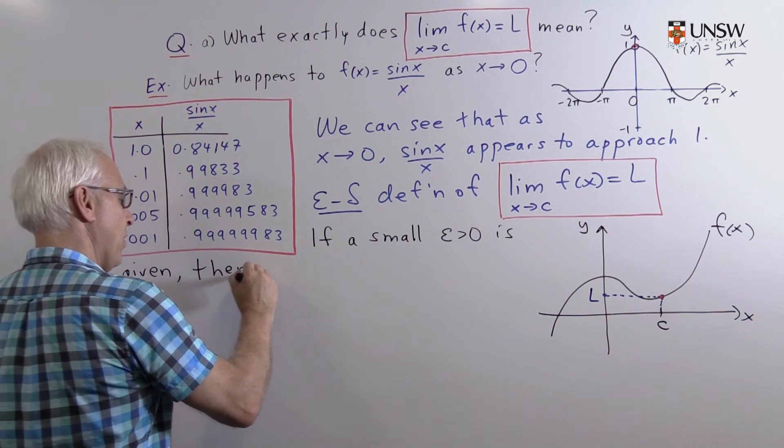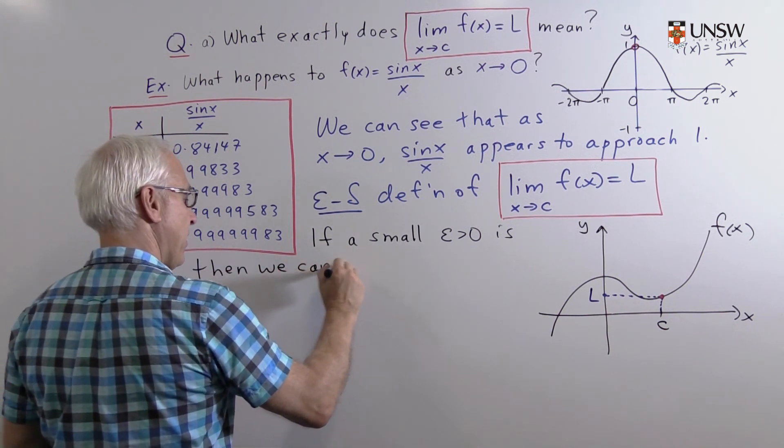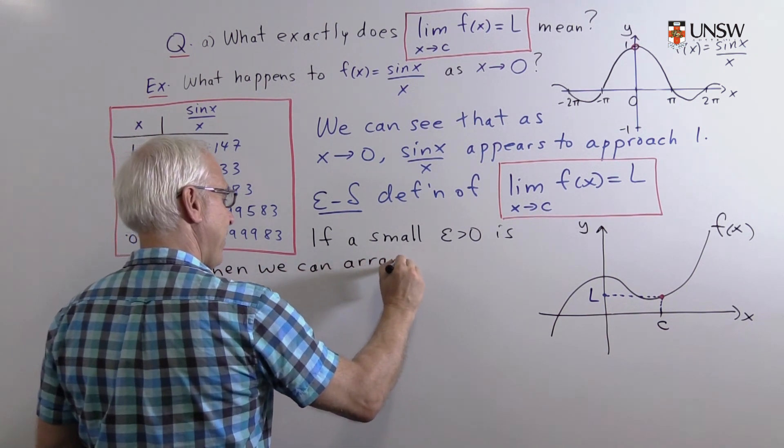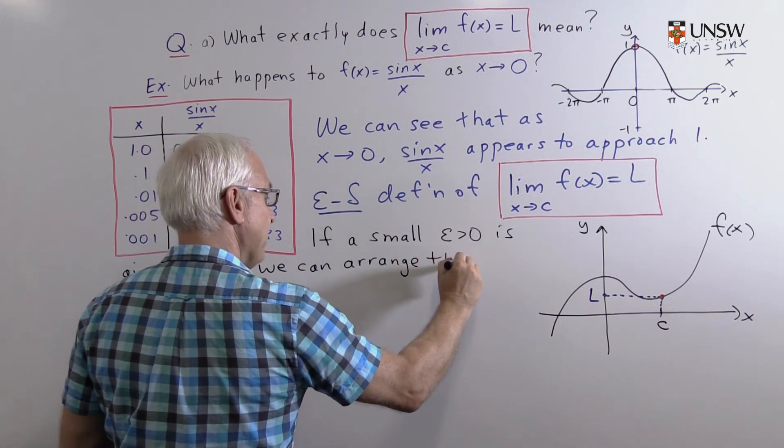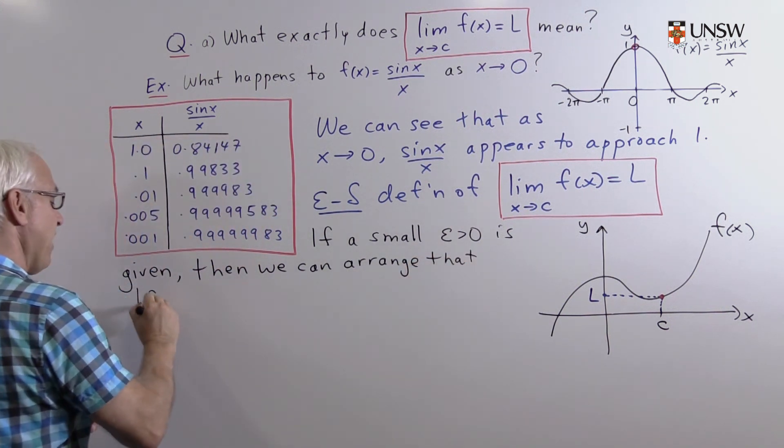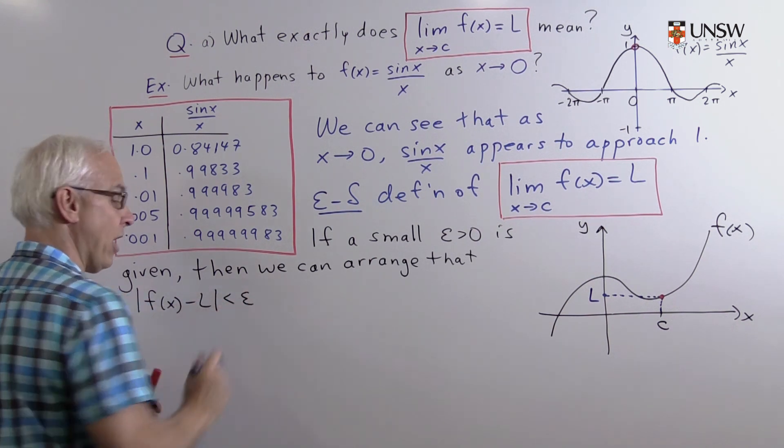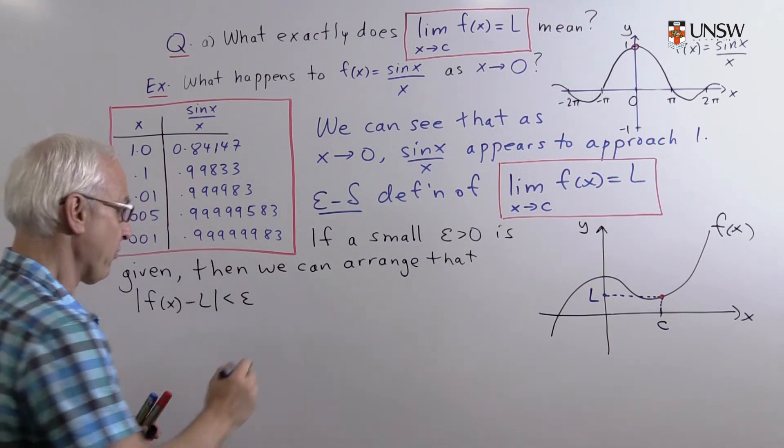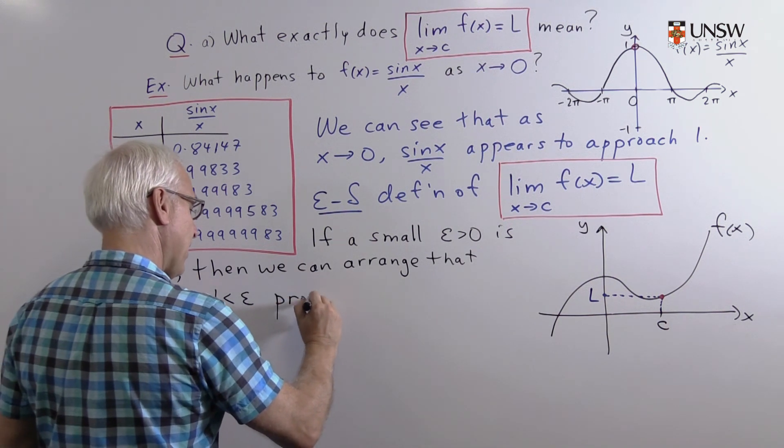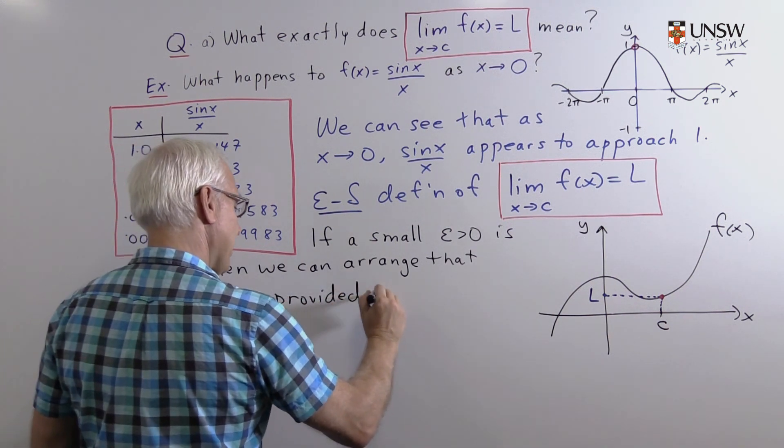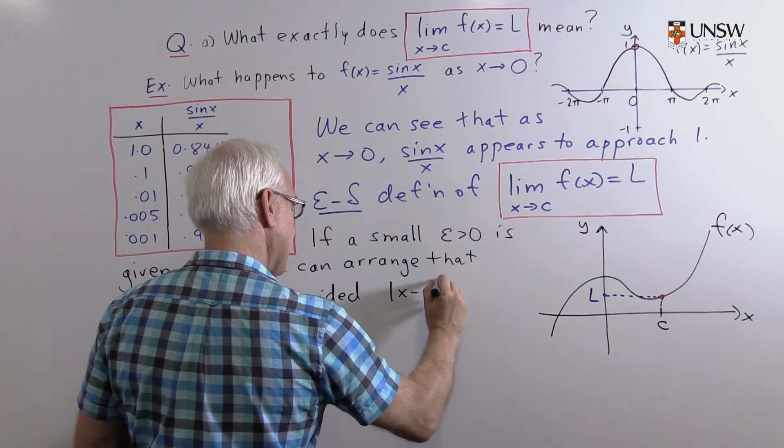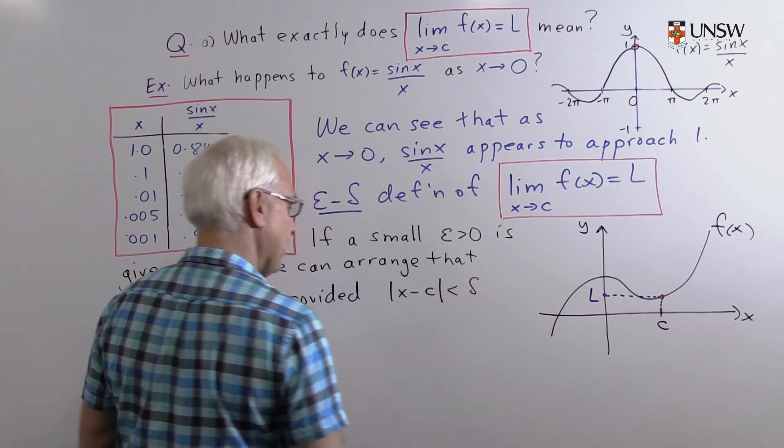We want to say that if a small number epsilon greater than zero is given, then we can arrange that the difference between f(x) and L is less than epsilon, provided that the difference between x and c is less than delta.